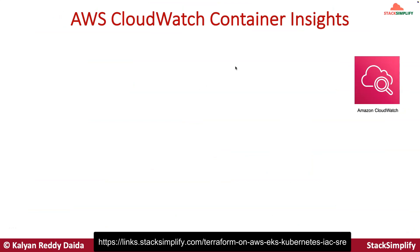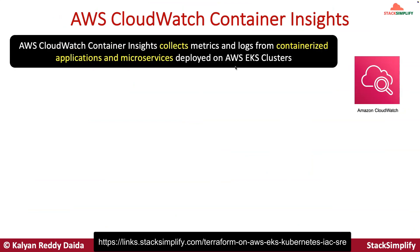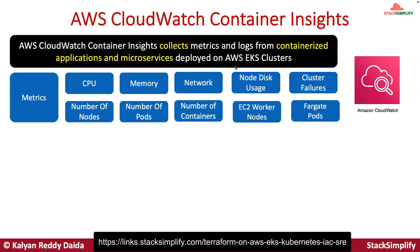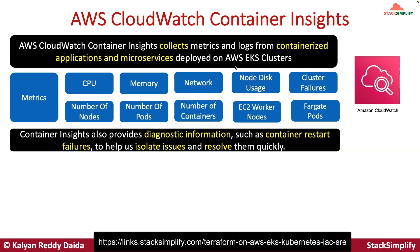AWS CloudWatch Container Insights collects metrics and logs from containerized applications and microservices deployed on AWS EKS clusters. It collects metrics like CPU, memory, network, node disk usage, cluster failures, number of nodes, number of pods, and number of containers present in your EKS cluster. These metrics are gathered from both EC2 worker nodes and Fargate pods. Container Insights also provides diagnostic information such as container restart failures to help isolate issues and resolve them quickly.